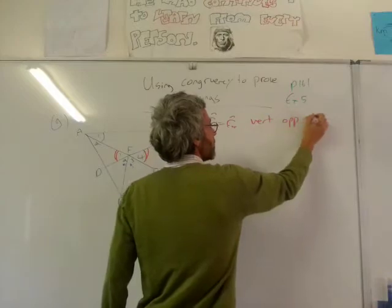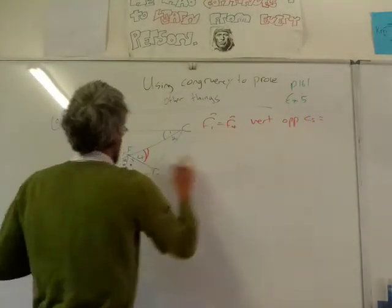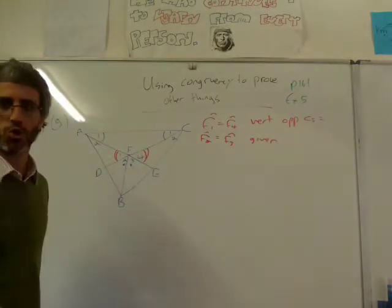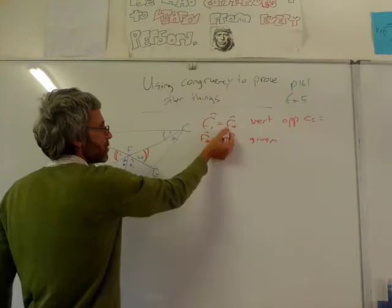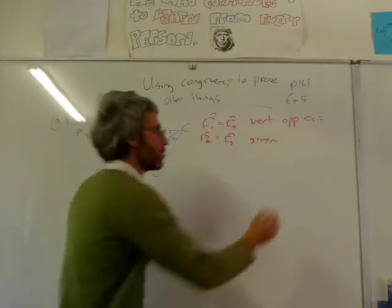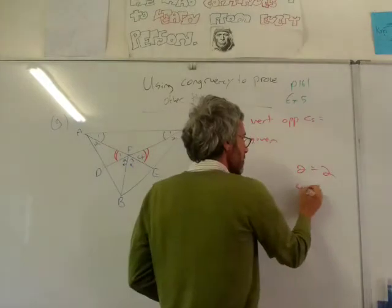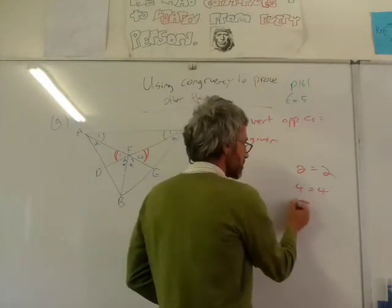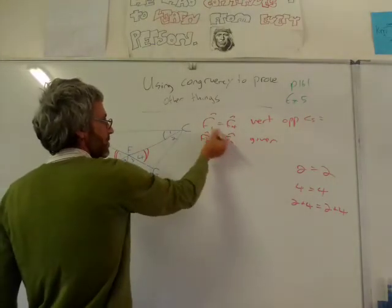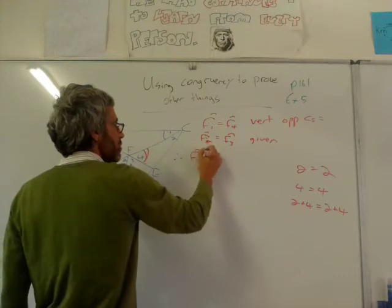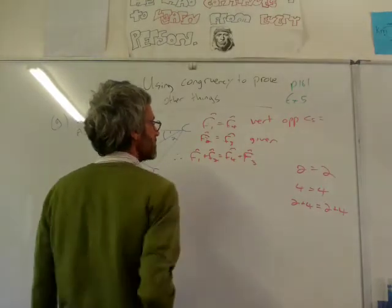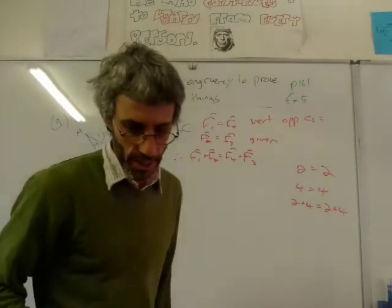Vertically opposite angles are equal. I already know I was given that F2 equals F3 - that was given. So if I've got F1 equal to F4 (vertically opposite), and F2 equal to F3 (given), then if I'm adding those two together, that'll be equal to the sum of the other two. For example, if 4 equals 4, that means 2 plus 4 equals 2 plus 4. So F1 plus F2 equals F4 plus F3 - and that's what I wanted to prove.